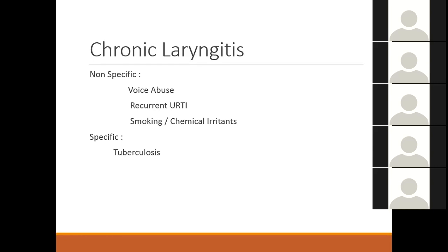Specific chronic laryngitis includes tuberculosis, which is common in Pakistan. However, tuberculosis laryngitis is very rare — in a career of more than 30 years only two or three biopsy-confirmed cases have been seen. Gastroesophageal reflux is another rare cause: in patients with hoarseness, hyperemia of the arytenoids on laryngoscopy is often due to reflux, and one must not forget about gastroesophageal reflux in chronic laryngitis.